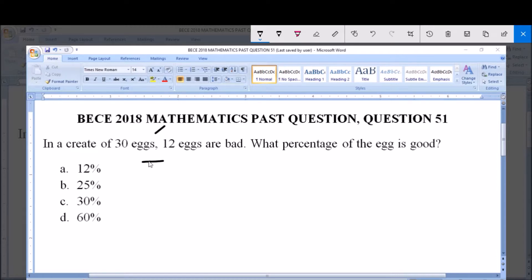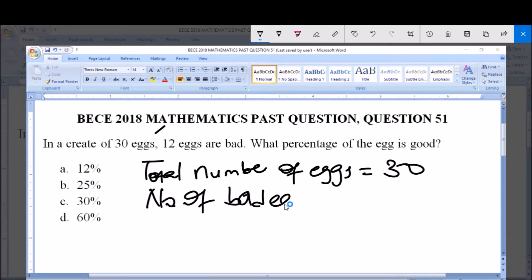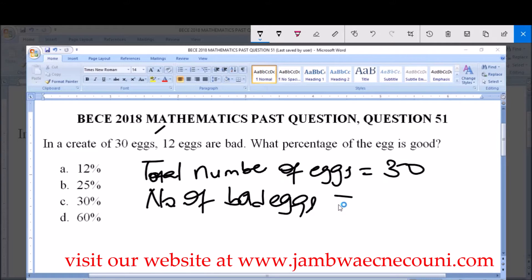Now we are given that in a crate we have 30 eggs, meaning the total number of eggs is equal to 30. Now out of this 30 eggs, 12 eggs are bad. So number of bad eggs is equal to 12.